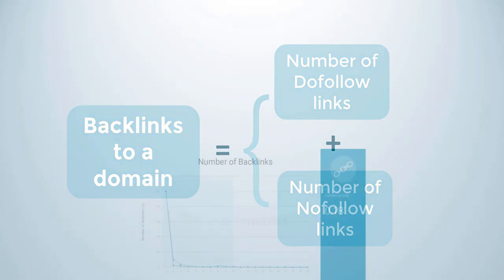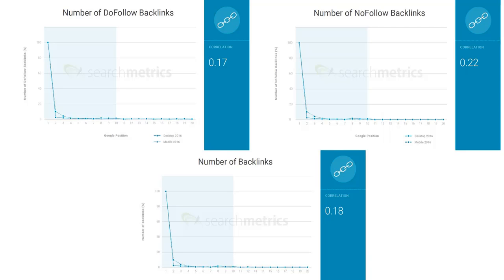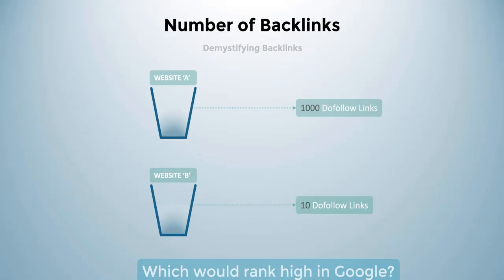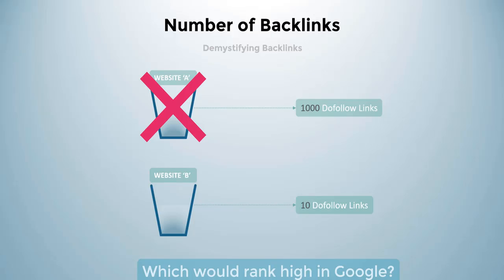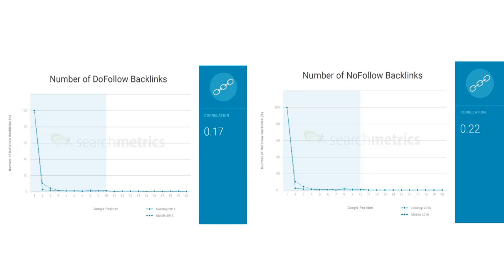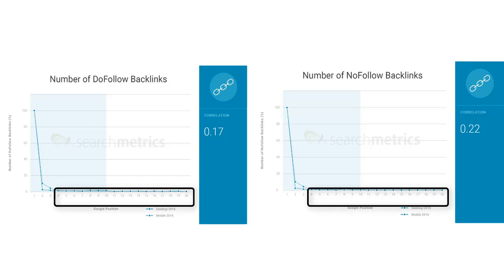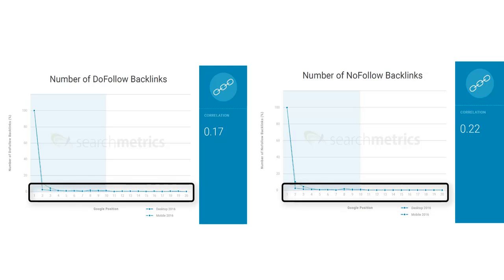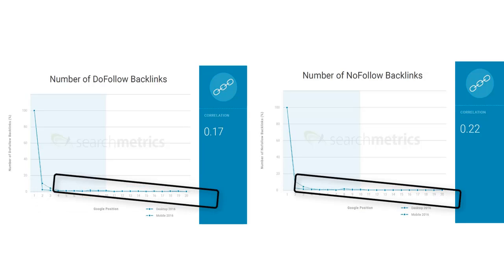Let's verify the above concept with these two graphs. Except for the difference in correlation factor, all three graphs look exactly similar, which means website A having 1000 dofollow backlinks cannot outrank website B with 10 dofollow backlinks purely based on number of dofollow backlinks alone, unless website A ranks first for that particular keyword. If both websites rank below the third search result, then the number of dofollow or nofollow backlinks doesn't matter at all. But if your website is not in the first 30 search results for any relevant keyword, then getting a few authentic dofollow links would boost your search ranking from nowhere to the top 30.